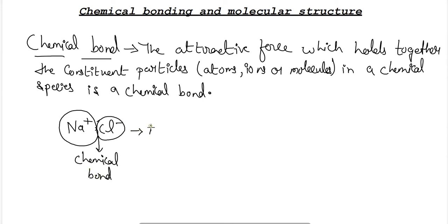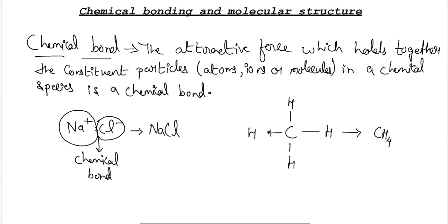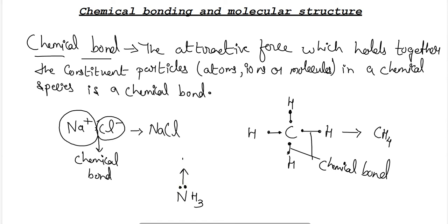Similarly, when carbon is attached with four hydrogens to form methane, one carbon atom is attached with four atoms of hydrogen — this type of connection is also known as a chemical bond. Also, when ammonia (NH₃) forms a bond with hydrogen and attains a positive charge to form the ammonium ion, that is also a type of chemical bond.